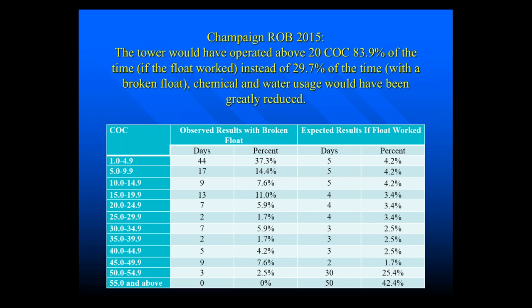The cycles of concentration ranged from 1.4 all the way up to 55 and above. This shows what we observed with a broken float — how many days we were at each cycle of concentration. It never got above 55 cycles of concentration and was above 50 only three days. If the tower had operated the way we expected, I estimated it would cycle up and stay at high cycles of concentration. The tower would have cycled above 20 cycles, 84% of the time if the float had worked — instead, it was more like 30% of the time.